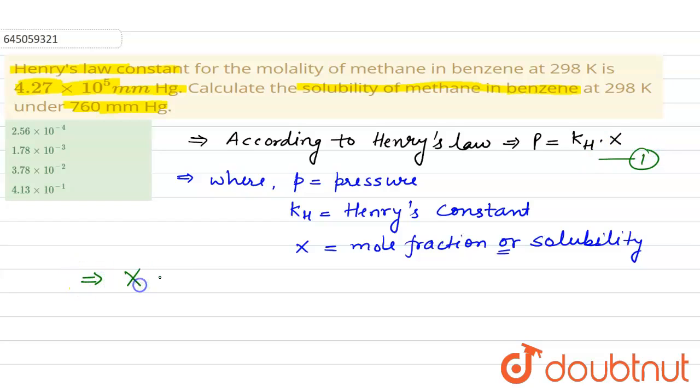the mole fraction x will be equal to P divided by kh, which will be equal to 760 divided by 4.27 into 10 to the power 5.